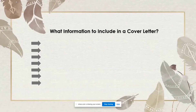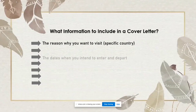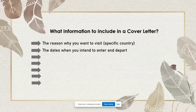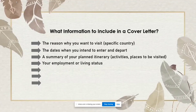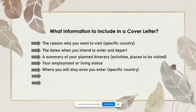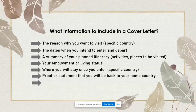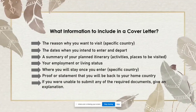What information to include in a cover letter? First, the reason why you want to visit that specific country. Second, the dates when you intend to enter and depart. Third, a summary of your planned itinerary and activities — for example, places to be visited. Fourth, your employment or living status. Fifth, where you will stay once you enter that country. Sixth, proof or statement that you will return to your home country. And last, if you were unable to submit any required documents, give an explanation for it.